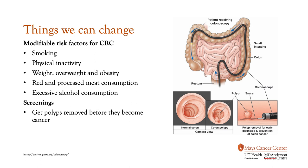A colonoscopy is a black tube with a camera at the tip. The gastroenterologist or GI doctor will move the tube through the colon to look for polyps. On the bottom right side, you can see that if a polyp is found, they can remove it through that procedure and prevent colon cancer.